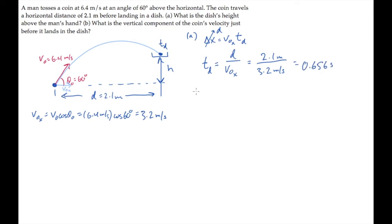Now we can use the vertical displacement equation to see how high the coin is at that time. In this equation, the horizontal displacement is the height h that we're looking for, the time equals the time to reach the dish, and v0y is the initial y component of velocity.